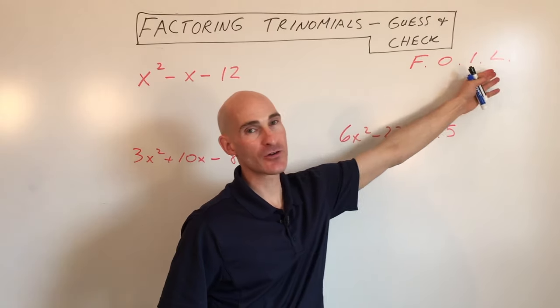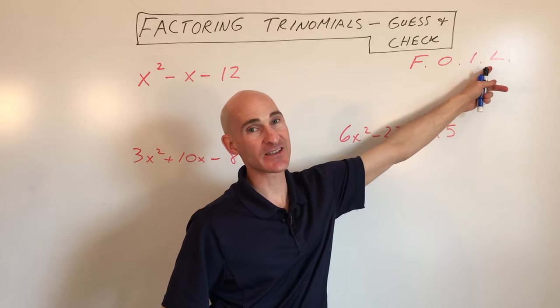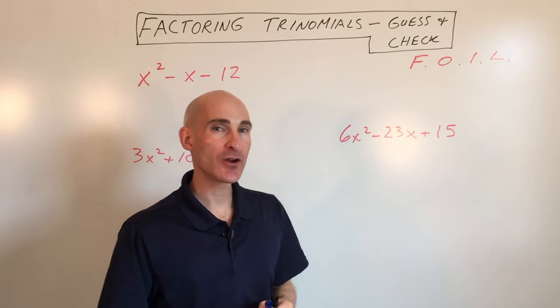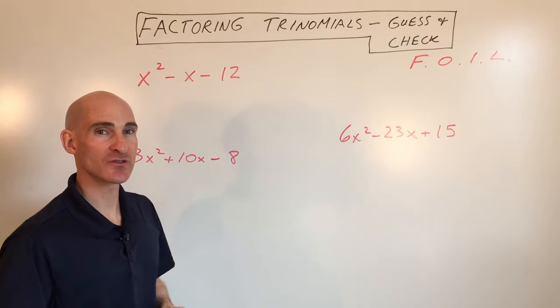We're going to be using this FOIL acronym, which refers to first, outer, inner, and last, to factor a trinomial, meaning three terms, into two binomials, meaning two groups of two terms.